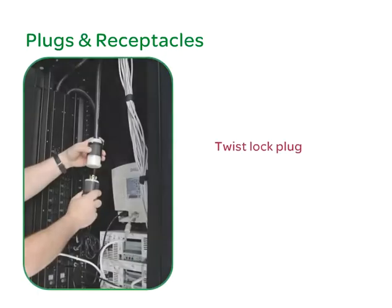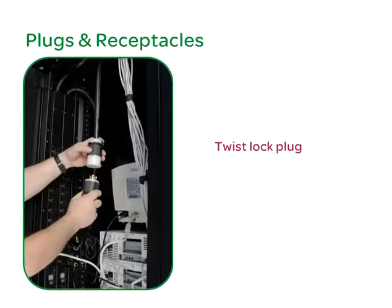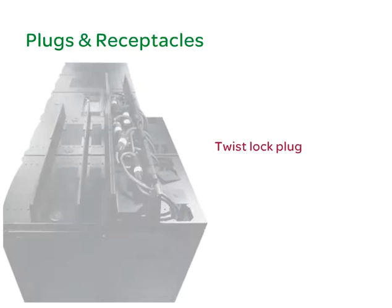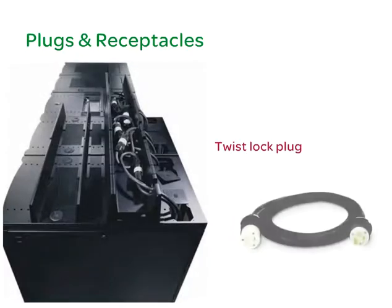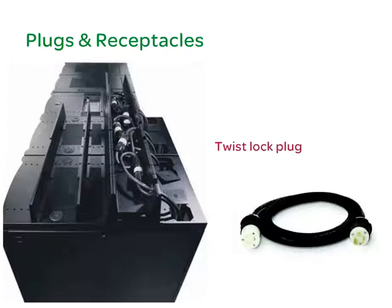Also common are plugs and receptacles of the twist-lock variety. The plug is twisted to lock into the receptacle. This is particularly useful if you choose to deploy overhead cabling rather than below the raised floor cabling. With twist-lock, the receptacle is less likely to allow gravity and vibration to dislodge it from its plug.